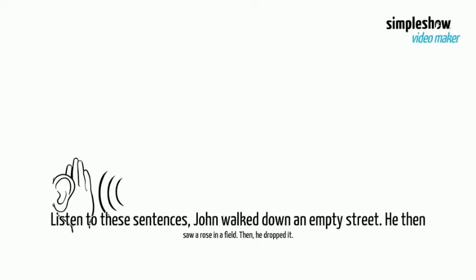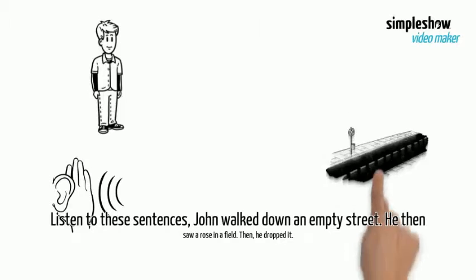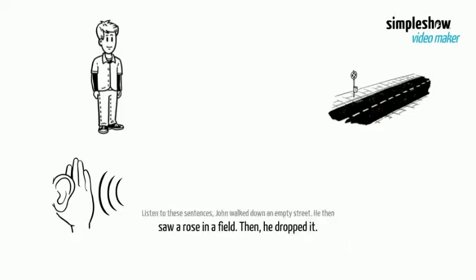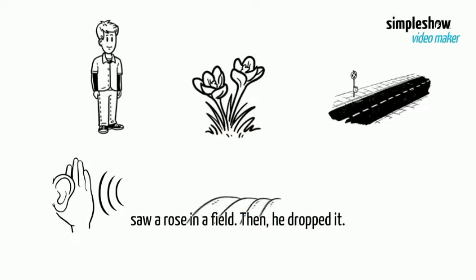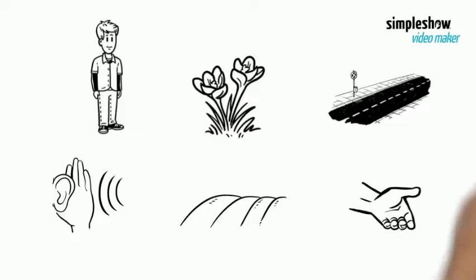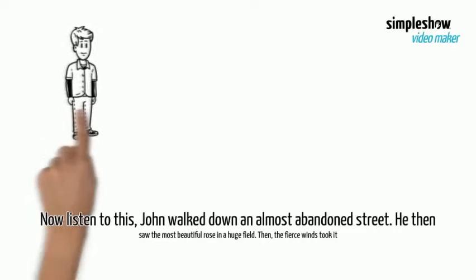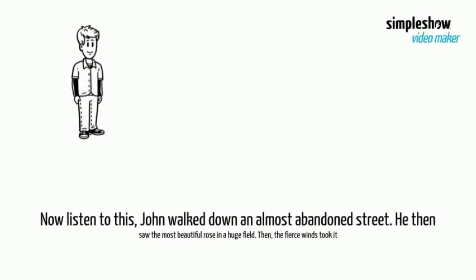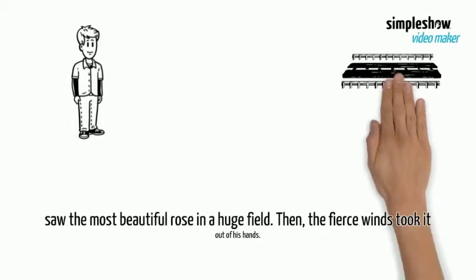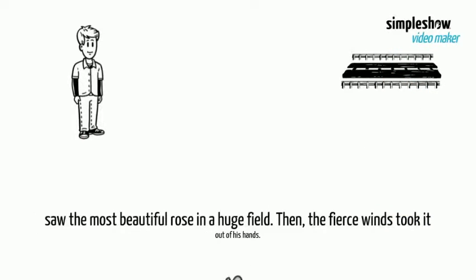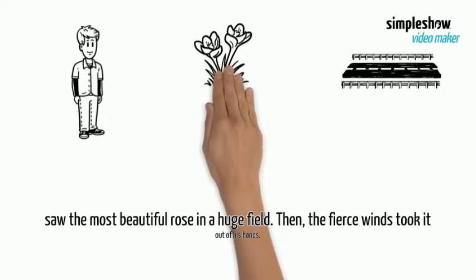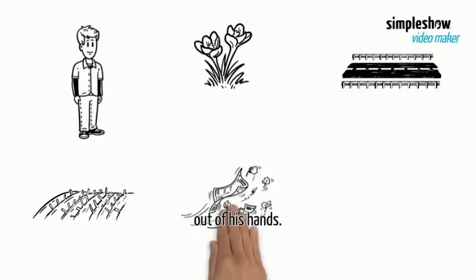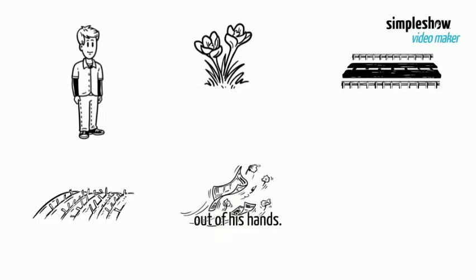Listen to these sentences. John walked down an empty street. He then saw a rose in a field. Then he dropped it. Now listen to this: John walked down an almost abandoned street. He then saw the most beautiful rose in a huge field. Then the fierce winds took it right out of his hands.